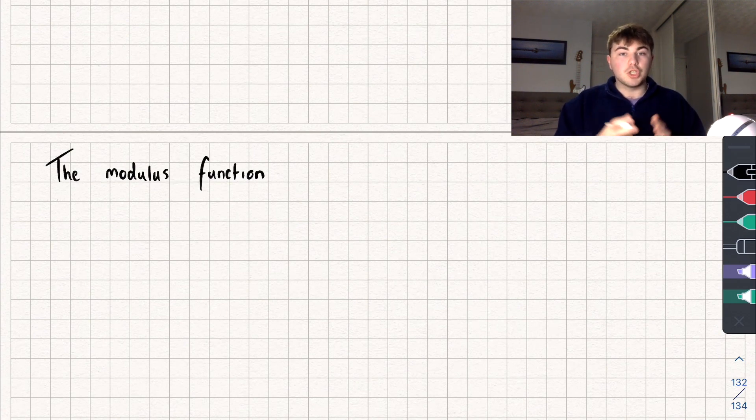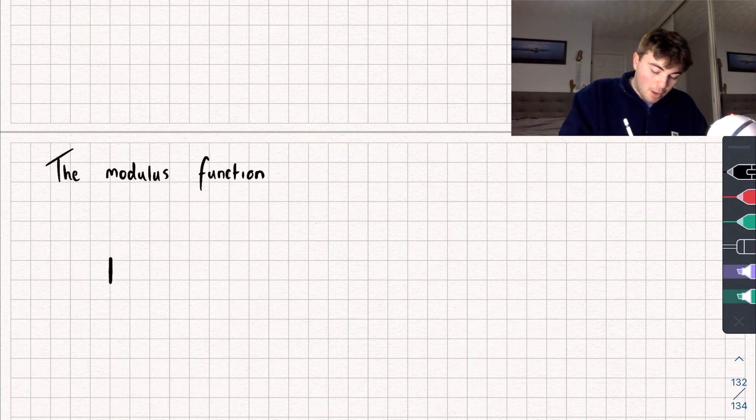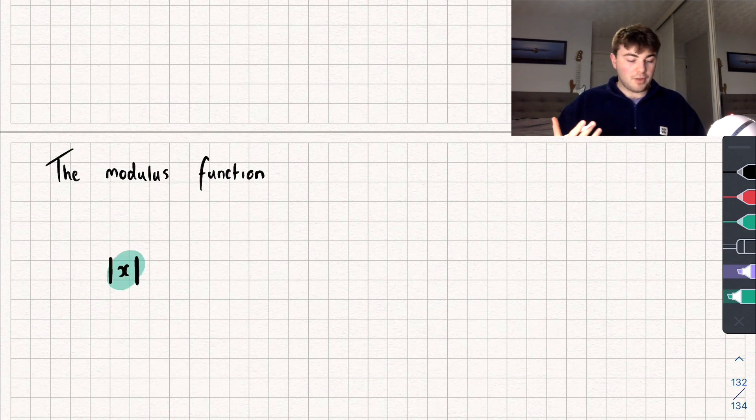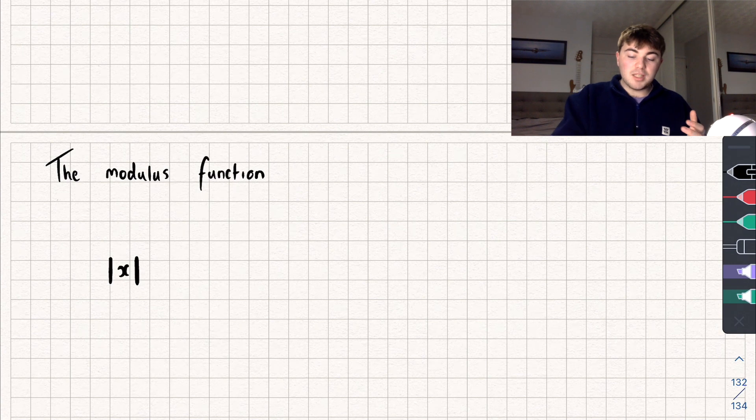So if we want to write down the modulus of x where x is just going to be a number, we write it like this: we write a bar then an x and then another bar. The way we would read this out is the modulus of x. You might also hear it called the absolute value of x, but in this video we're just going to be talking about the modulus of x.